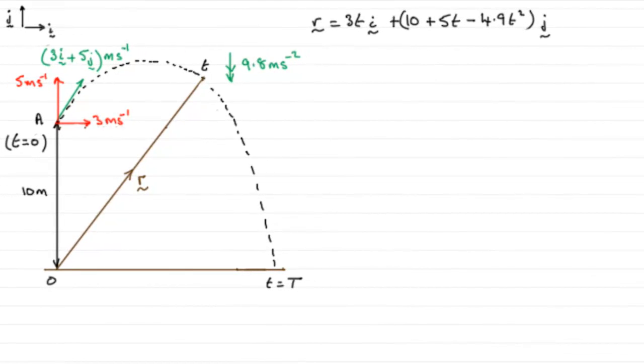Now for this part of the question we're told that when the particle hits the ground the time t is big T, and we've got to find out what this big T value is.